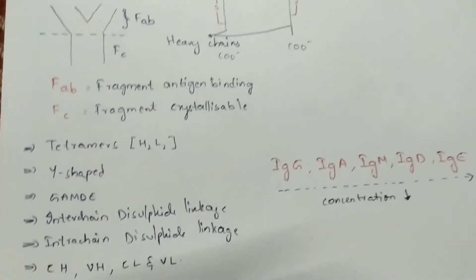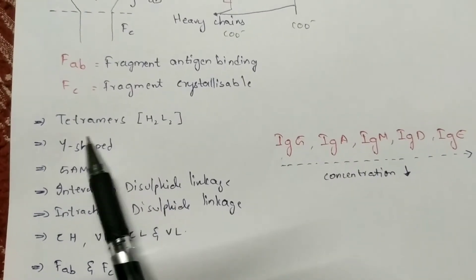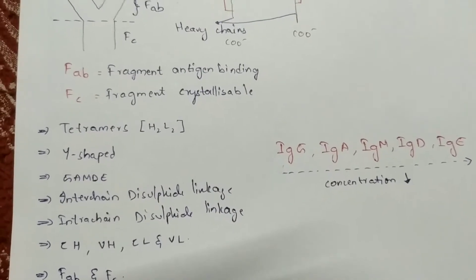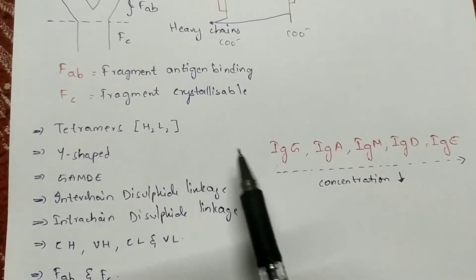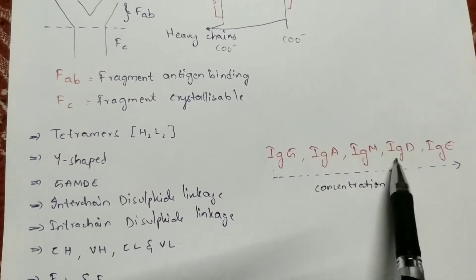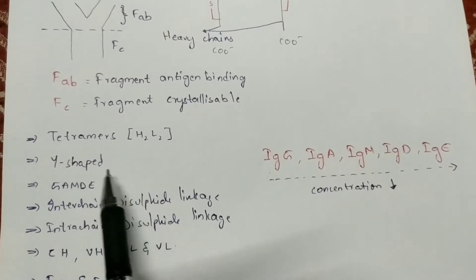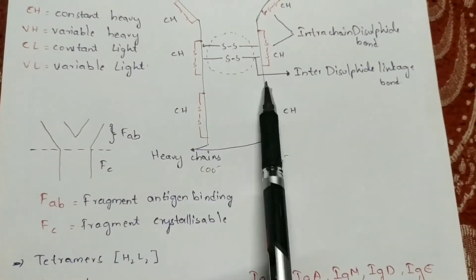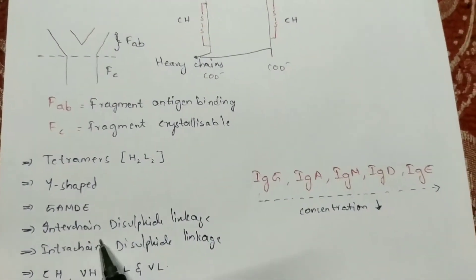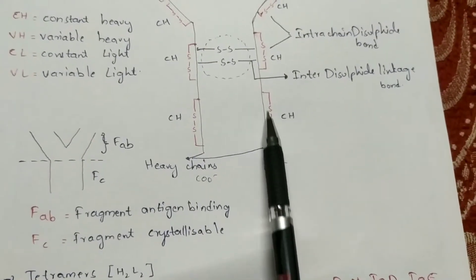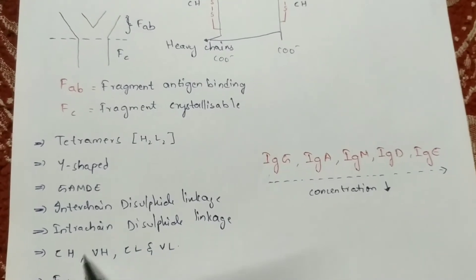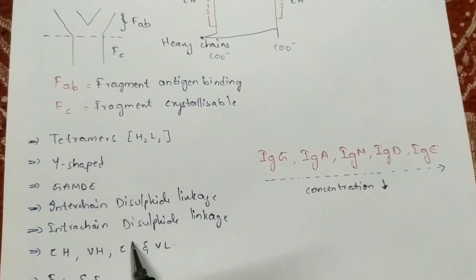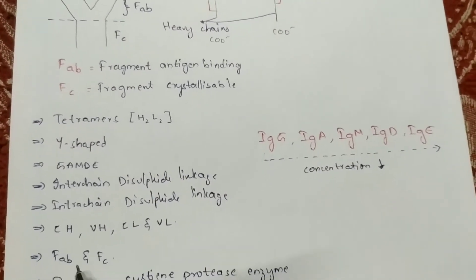Key points to remember: immunoglobulins are tetramers (H2L2) consisting of two heavy chains and two light chains. They are Y-shaped and hence called gamma globulins. They consist of inter-chain disulfide linkages between the two heavy chains, and intra-chain disulfide linkages present on the outside, which help in balancing the heavy chains. The types of intra-chain bonds are constant heavy (CH), variable heavy (VH), constant light (CL), and variable light (VL).